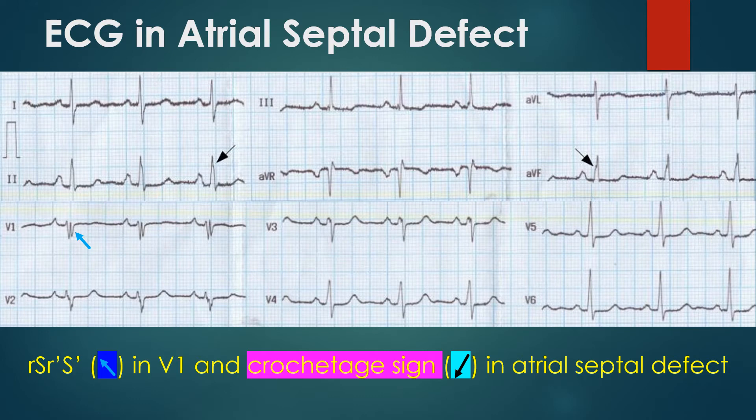Early disappearance of the crochet touch sign after surgical correction of atrial septal defect was found in 35% of cases, even when the incomplete right bundle branch block pattern persists. This ECG also shows right atrial overload, as evidenced by a P wave amplitude of 3 mm in lead 2.